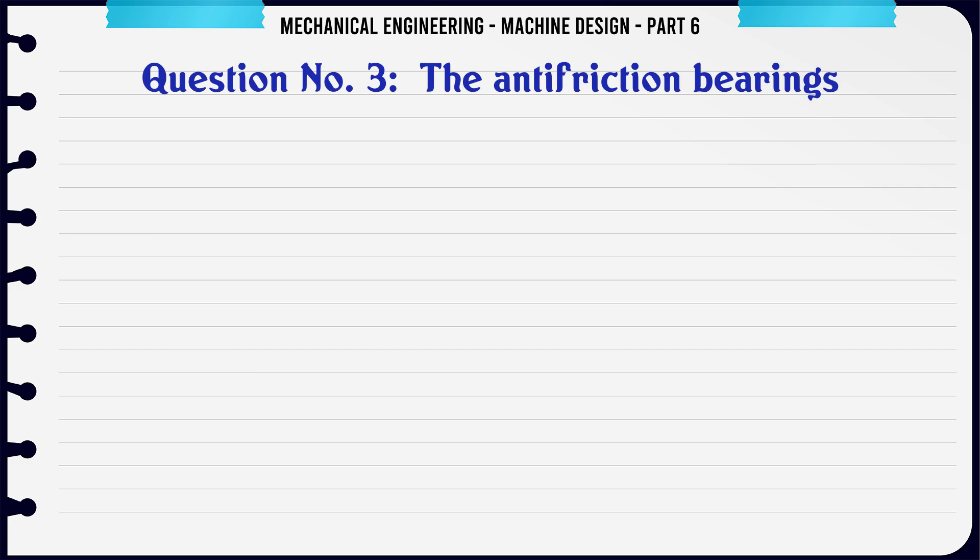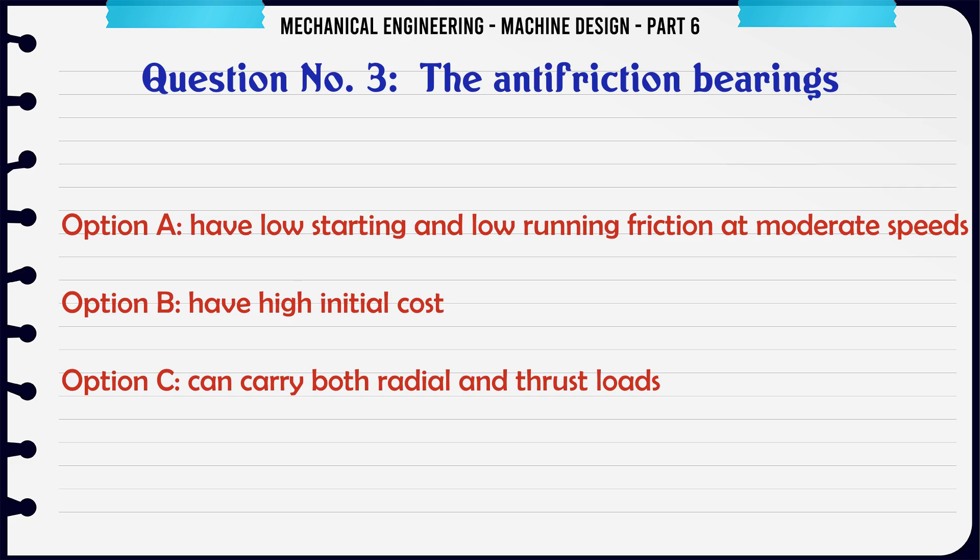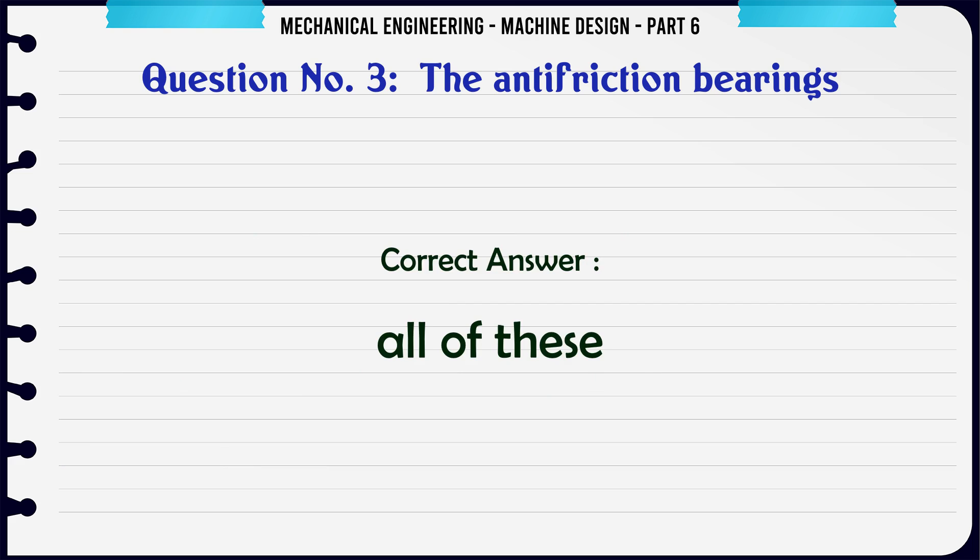The antifriction bearings: A) have low starting and low running friction at moderate speeds, B) have high initial cost, C) can carry both radial and thrust loads, D) all of these. The correct answer is all of these.